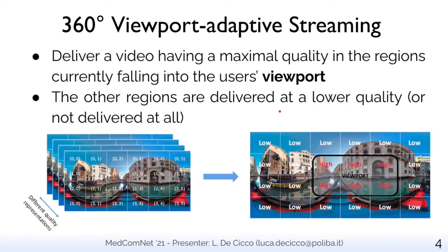The main idea to reduce network bandwidth requirements, proposed by 360 video adaptive streaming algorithms, is to encode each video representation so that different regions of the scene are encoded at different bitrates. In particular, the bitrate budget can be placed in the part of the scene that matters in terms of QoE — that is, the viewport. With this approach, ideally, only the part of the video currently falling into the user's viewport is delivered at high quality, while other regions are delivered at lower quality, or in the extreme case, not delivered at all.